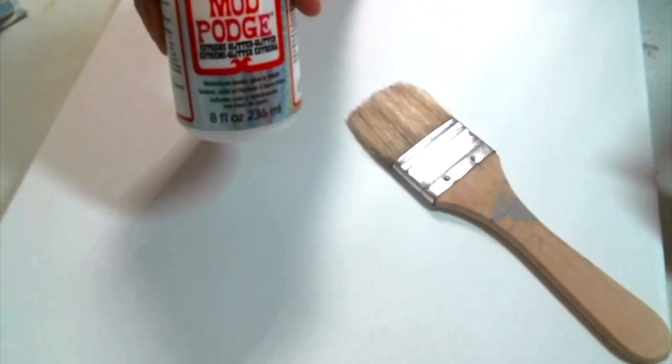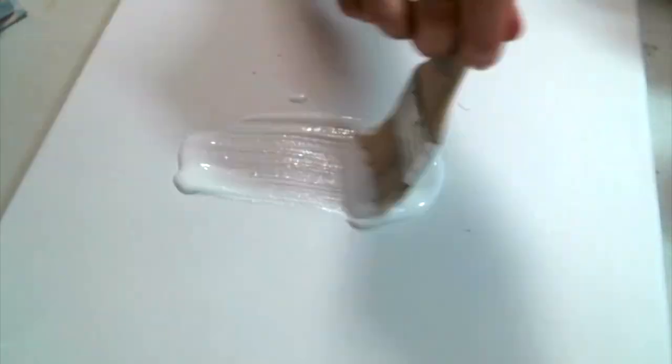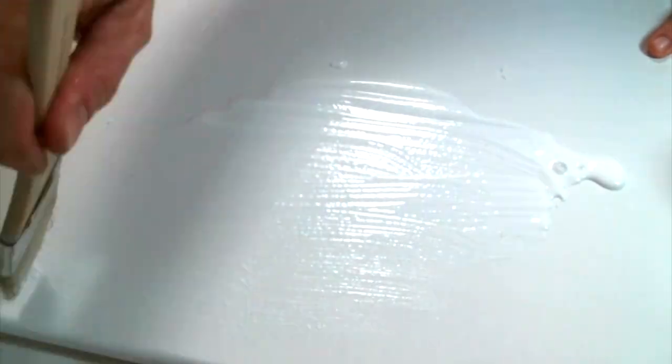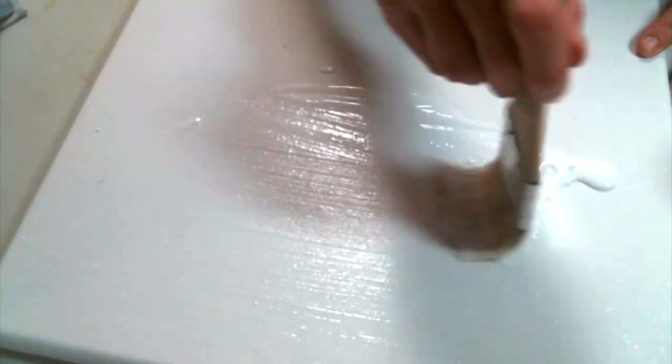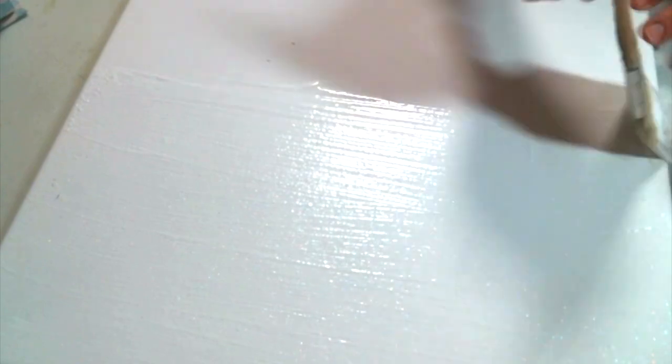I start by covering my canvas with some the extreme Sparkle Mod Podge and I do give it two coats. You can't really see on the video and from the photos but while it's hanging on my wall the glitter does show through the lace quite beautifully and I do love it. So don't skip this step.